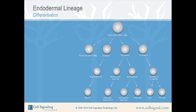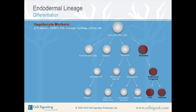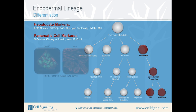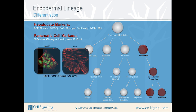Endodermal Lineage. The last of the primary germ layers, the endoderm, differentiates into an endodermal progenitor, which further differentiates into hepatocytes (liver cells) and pancreatic cells. Markers used to identify hepatocytes include AFP, albumin, CEBP-beta, FAS, glycogen synthase, HNF4-alpha, and MET. Pancreatic cell markers are C-peptide, glucagon, insulin, NeuroD, and PDX1. The figures shown here display expression of two common markers for hepatocytes and pancreatic cells, respectively.